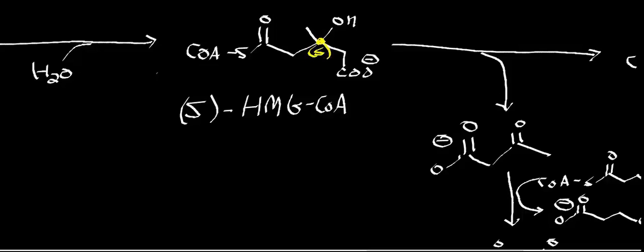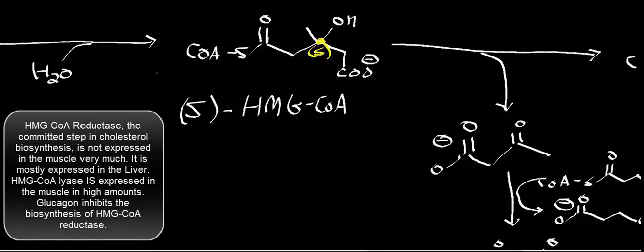HMG-CoA has multiple routes it can go through. If you're in a time when you're doing anabolic processes, that's not going to be a time when you're doing amino acid catabolism. Whenever insulin is present, that's generally when you do cholesterol biosynthesis. When glucagon is present, that's when you're doing this process — glucagon stimulates amino acid catabolism. So when glucagon is present and blood sugar is low, you're not running on glycolysis, you're running on amino acid catabolism.